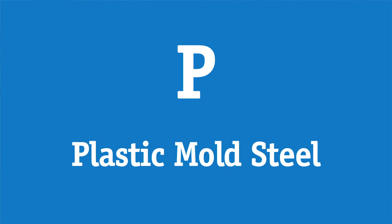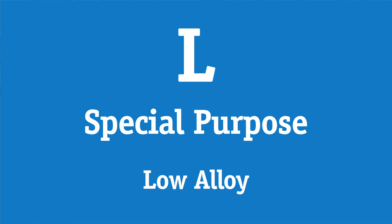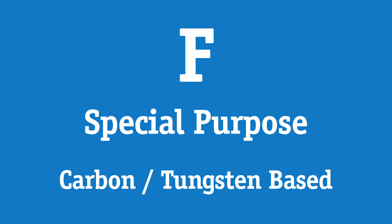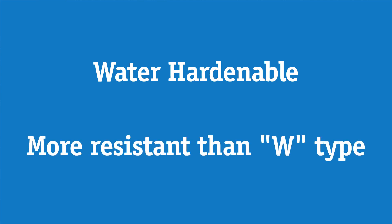P is for plastic mold steel, which are designed to meet the needs of zinc die casting and the special requirements of plastic injection molding dies. L is for low alloy special purpose steels. And F is for carbon tungsten based special purpose steels, which are water hardenable and more wear resistant than W type tool steel.